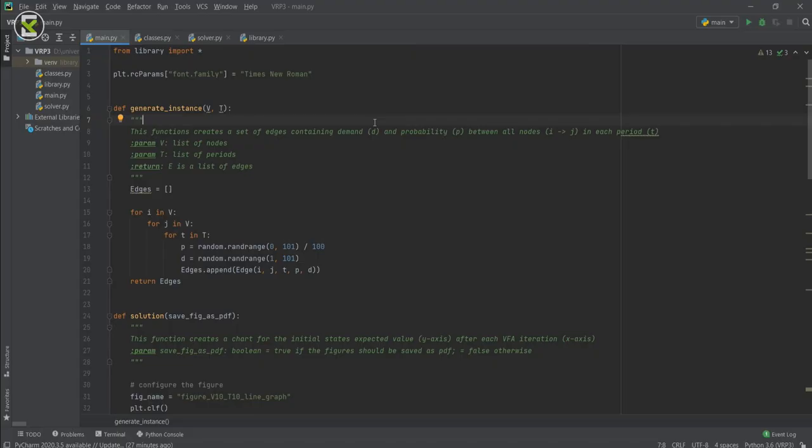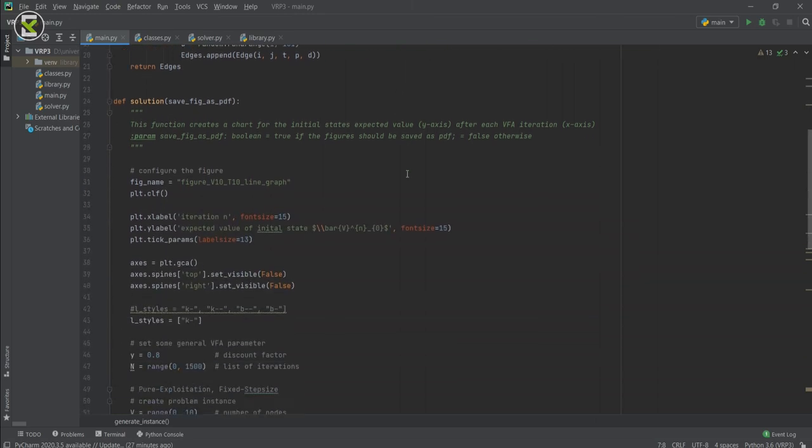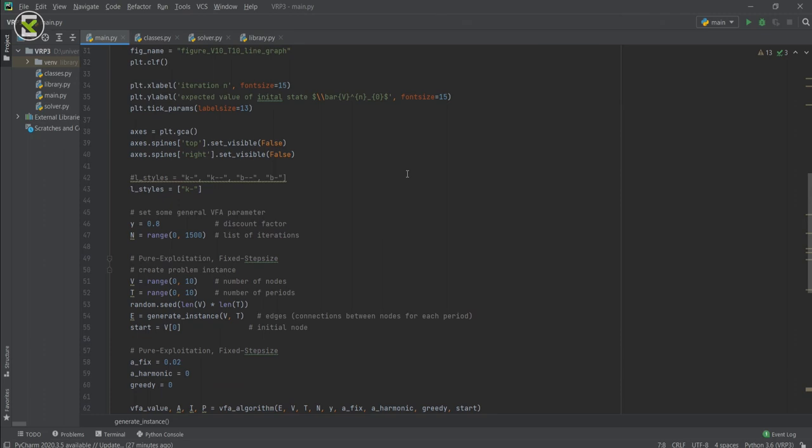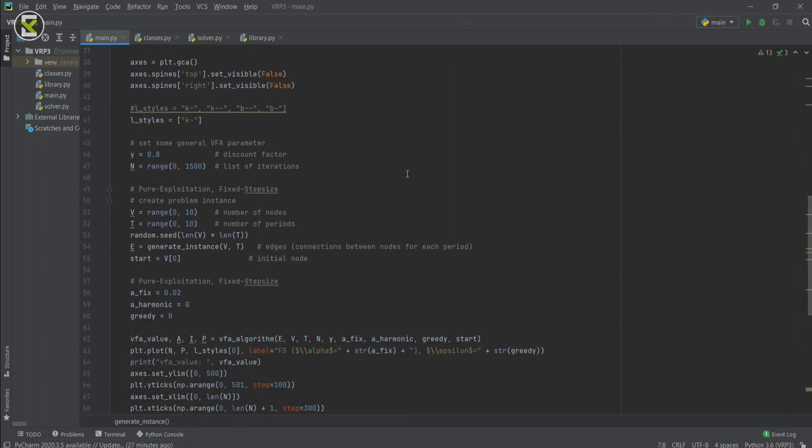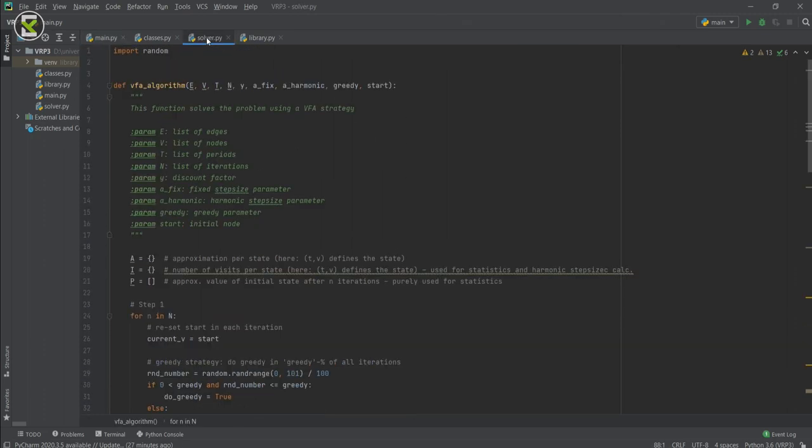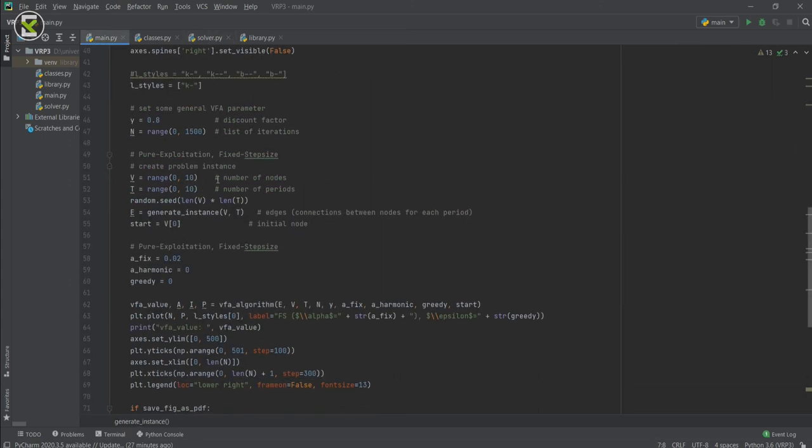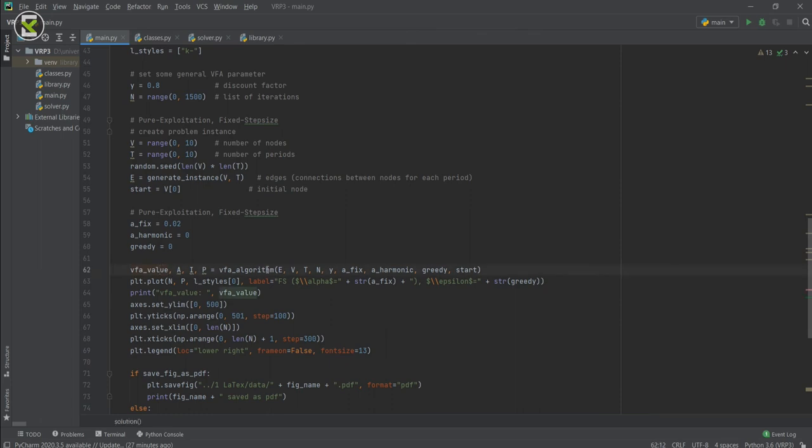Now let's look at the code. Similar to our TSP code, here we have the library file, the solver and our classes and also main Python file. Again, we first have the generate instances function with list of edges and we use it in our solution function. We go further and use our initial parameters in our solver which holds our VFA algorithm that we use in line 62 here. And finally, we plot the results.